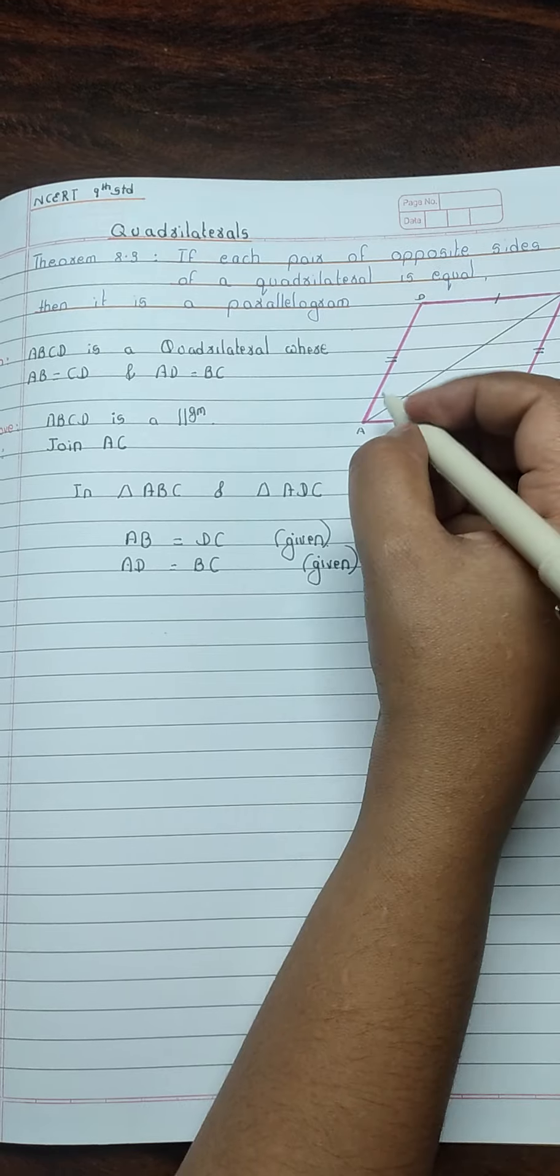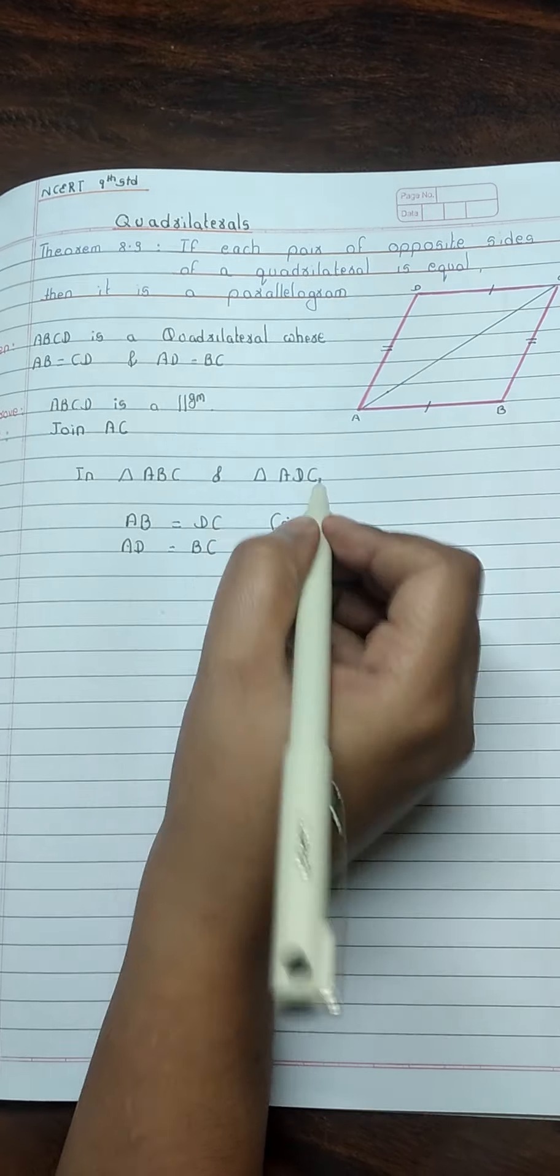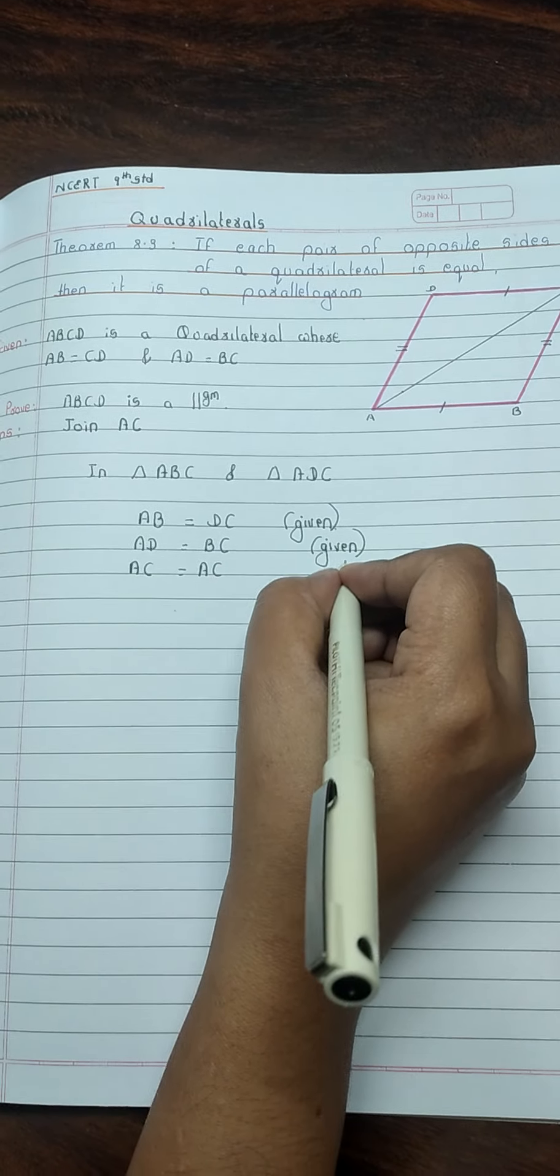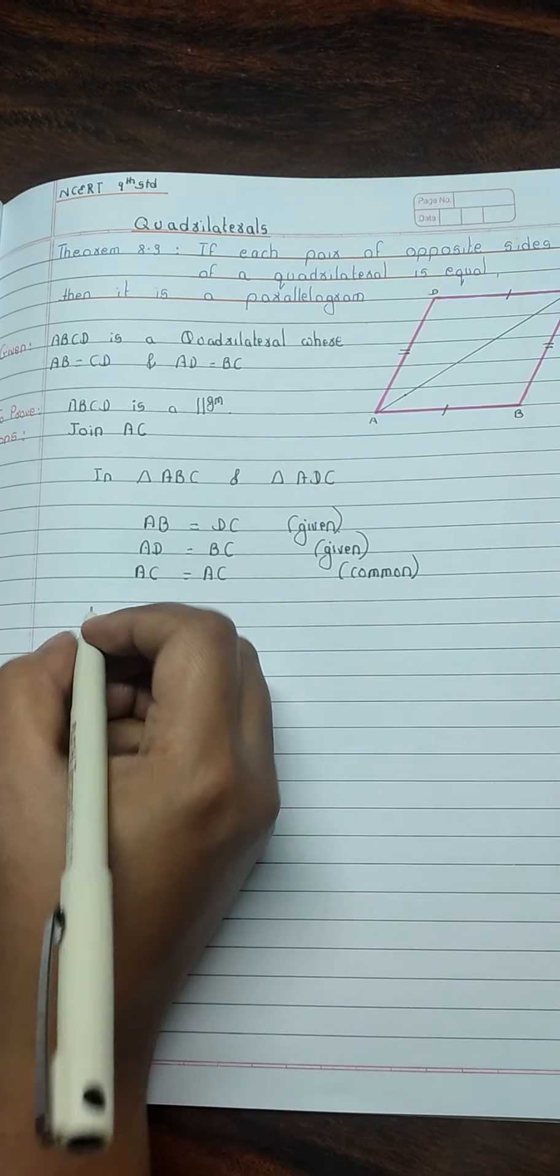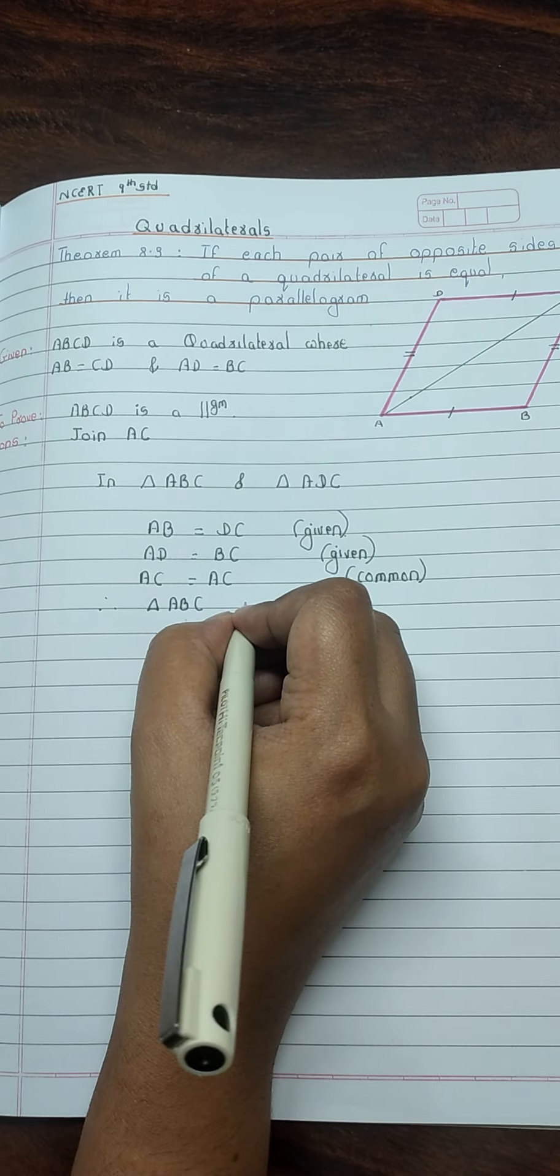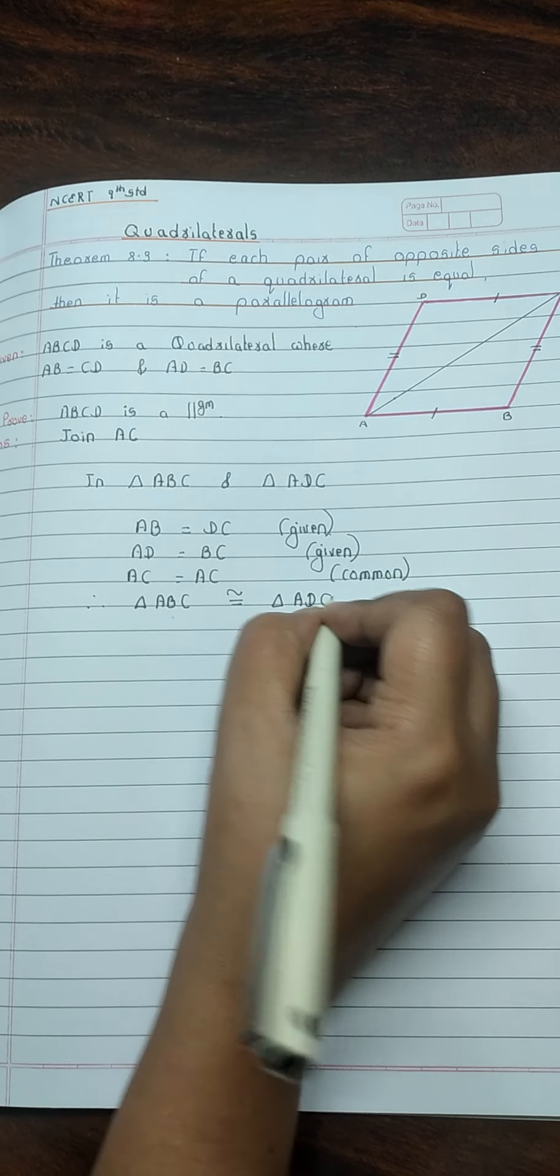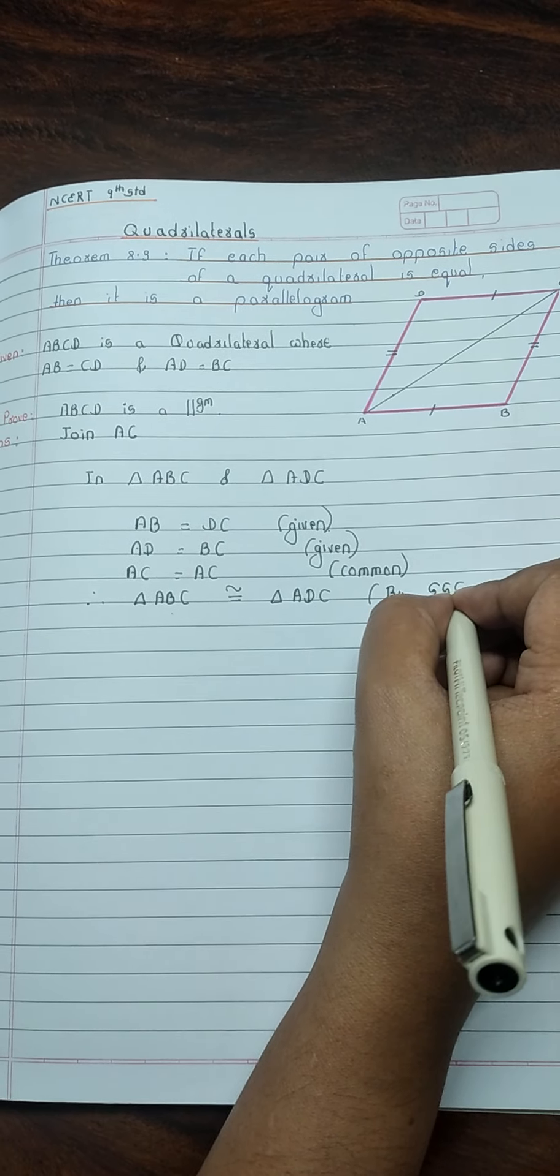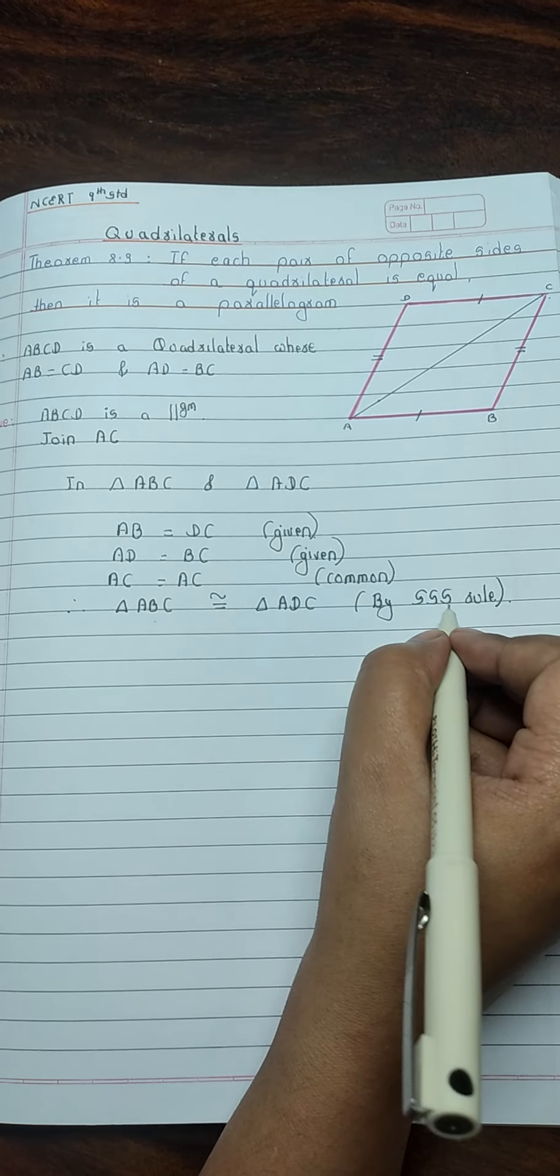In these two triangles, AC is common. AC equal to AC, common. Therefore, triangle ABC congruent to triangle ADC by SSS rule. That is, side, side, side rule.